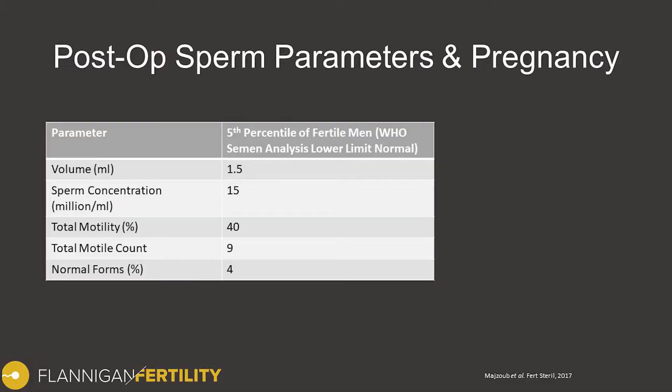As a result, the volume of semen is one and a half cc's or milliliters as the normal lower limit. Sperm concentration is 15 million sperm per milliliter, total motility of about 40%, total motile count of 9 million, and normal forms — meaning the shape or morphology of the sperm — are 4% or better using strict criteria.